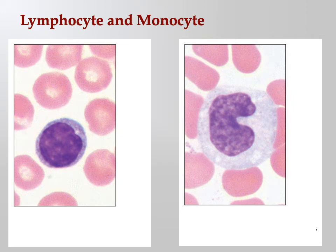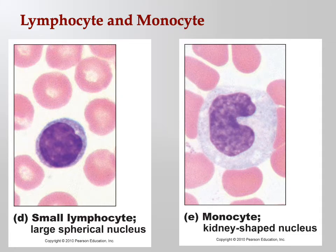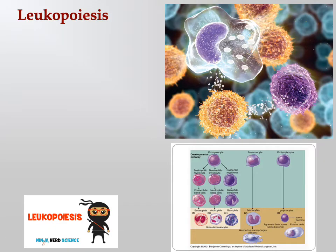Following up from the last PowerPoint, can you spot which two white blood cells are shown? The one on the left has the big spherical nucleus and the one on the right has the kidney bean shape. The one on the left is a lymphocyte; the one on the right is a monocyte.